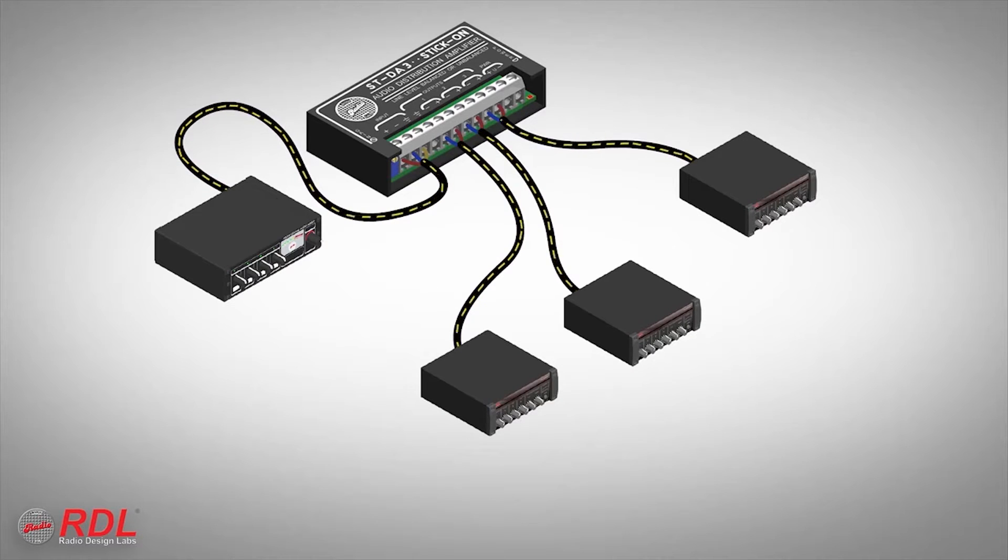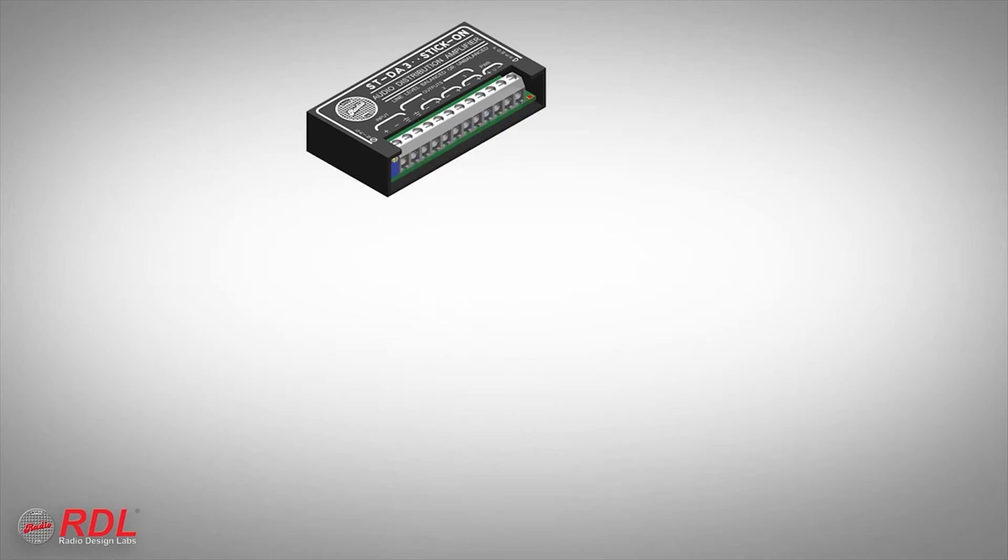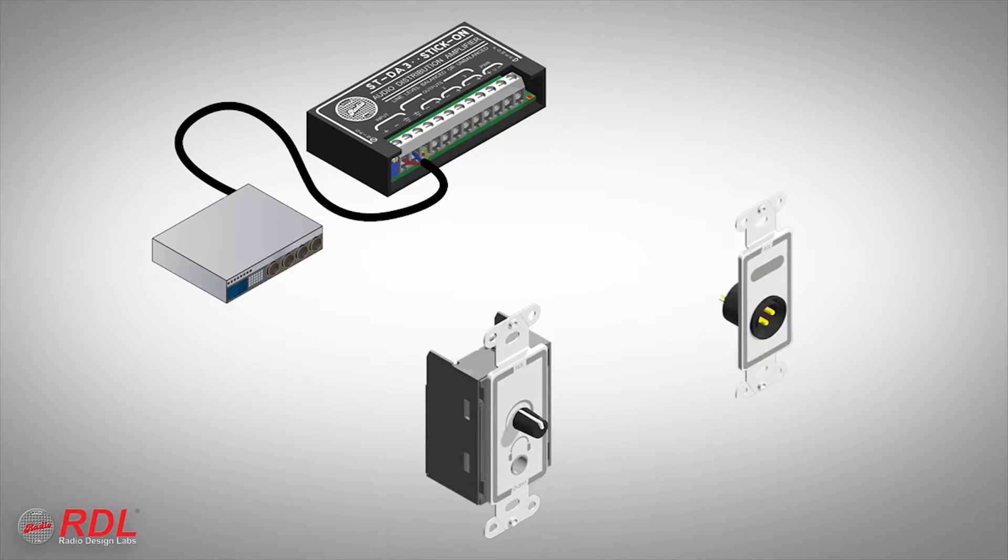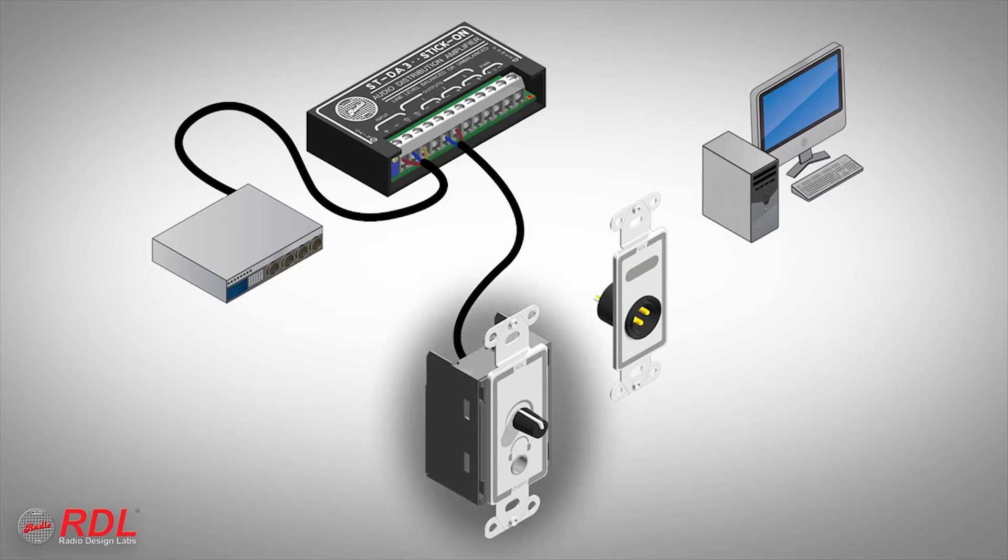Two modules may be used together for stereo. The STDA3 can send the input source to different types of equipment such as a headphone amplifier, recording device, and a wall plate jack.